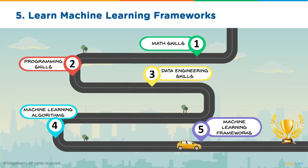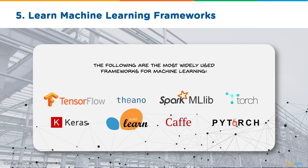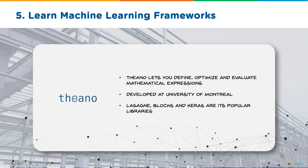Now for your last step: learning machine learning frameworks. Machine learning frameworks make lives easier for developers and users by removing the complex parts of machine learning. Widely used frameworks include TensorFlow, Theano, Torch, and scikit-learn. TensorFlow is the most widely used — it's an open source library used for machine learning and deep learning that performs numerical computations using data flow graphs. Google Translate is one of its most popular use cases. Theano helps you define, optimize, and evaluate mathematical expressions. Developed at the University of Montreal, its most popular libraries are Lasagne, Blox, and Keras.